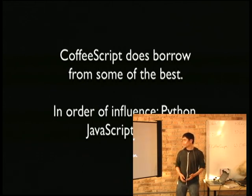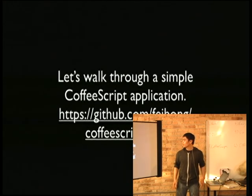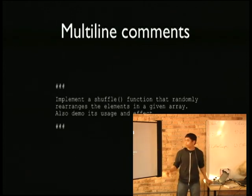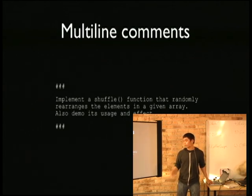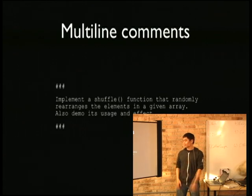That order of influence might be totally fake. Let's just look at a simple example. So here we have some multi-line comments — that's really basic. What I'm implementing here is a shuffle function, just like what you find in the random module in the Python standard library. In Python you just do 'from random import shuffle'. In JavaScript, you have to search the web and copy off someone's code from Stack Overflow.